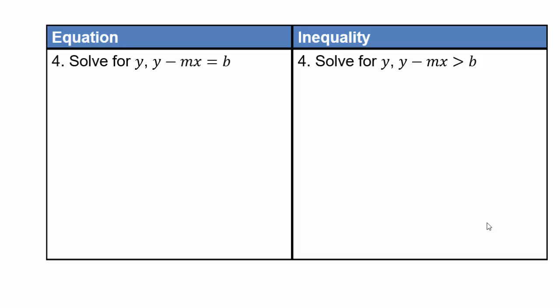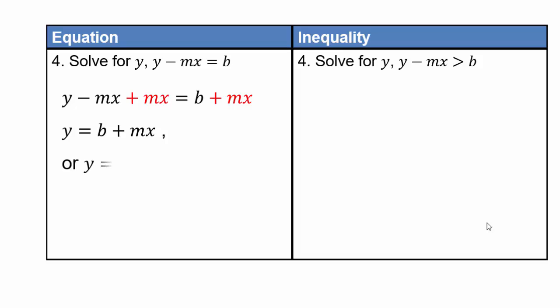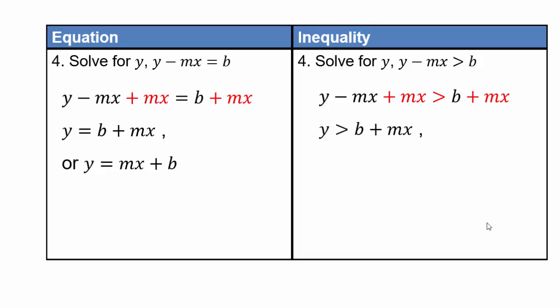Alright, we solve for y, which means we want to take away the mx. Since we have negative mx, add mx to both sides, so we'll have y equals b plus mx. I could also write that as y equals mx plus b. Some of you might recognize that as the equation of a line in slope-intercept form. For the inequality, you'll do the same thing and get y greater than b plus mx, or y greater than mx plus b.